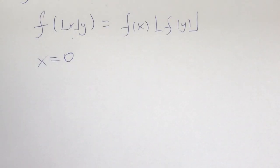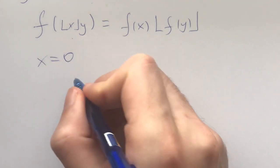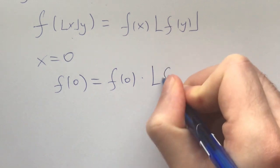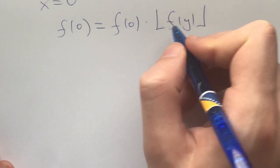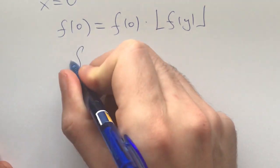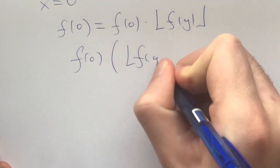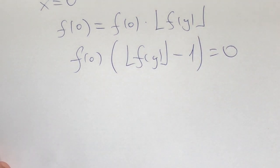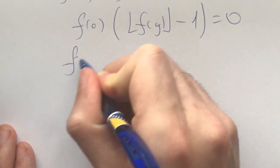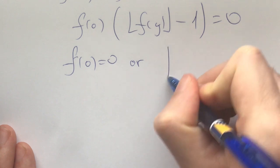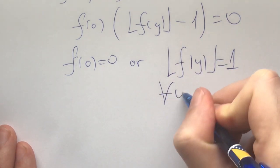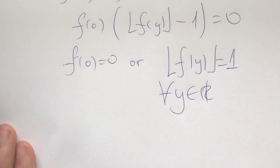As a general principle in solving functional equations, you want to plug stuff in one at a time. With x equals zero, we get f of zero equals f of zero times the floor of f of y. This gives us, for all real numbers y, that f of zero times the quantity floor of f of y minus one equals zero. This means either f of zero is zero, or the floor of f of y equals one for all real y.